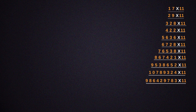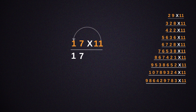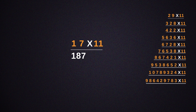First, take 17 into 11. Multiply 1 with 7, which gives us the answer as 7. Then multiply 1 with the first digit of the number we're multiplying with — in this case, that is 1. 1 times 1 gives us 1 again. Now take the addition of the two digits, which is 1 plus 7, that is 8. So as a result, we get the answer as 187.